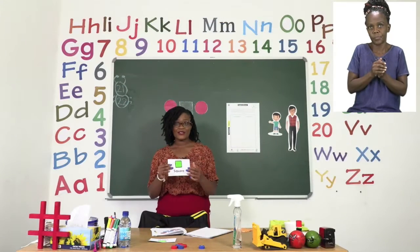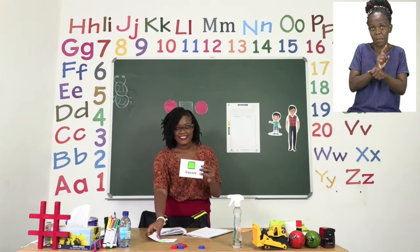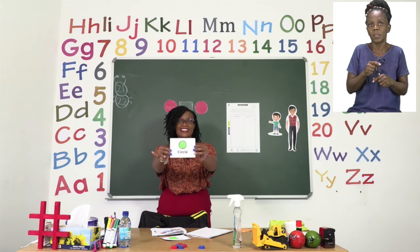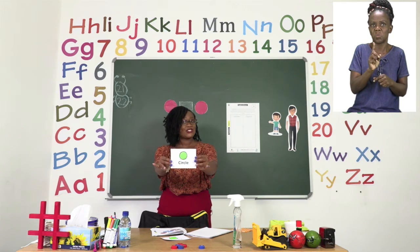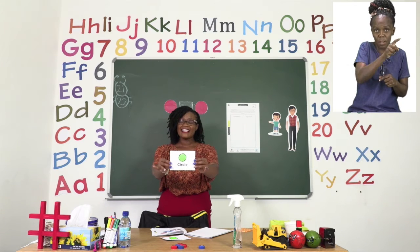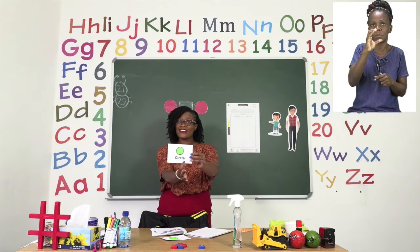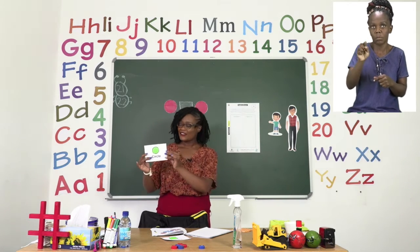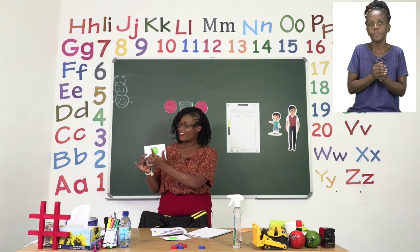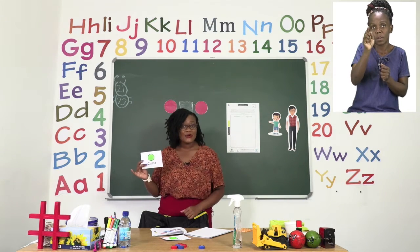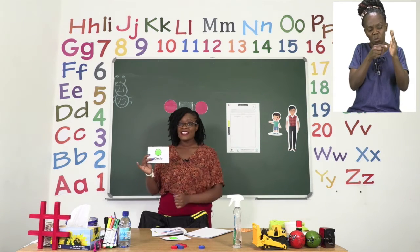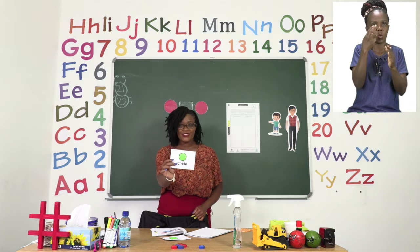I have the first shape we can see and the second one. Let's do this one first. This one is a circle. Everyone, let's say circle. Circle. Very good. Now you can see that my circle is round and it has no corners and it has only one surface. This is a circle.